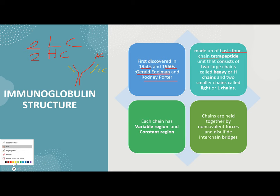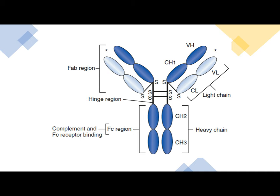When we say tetrapeptide unit, they are composed of 4 peptide segments. The heavy chain is made up of 4 tetrapeptide segments, and your light chain is also composed of 4 tetrapeptide segments.